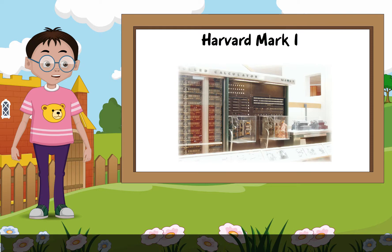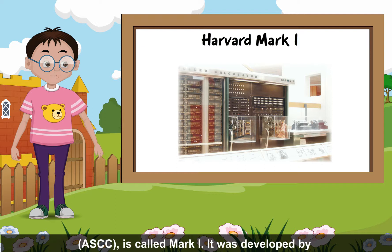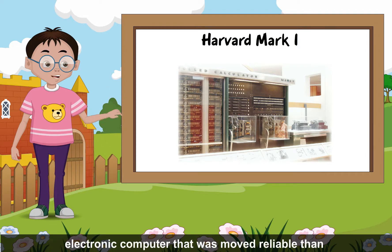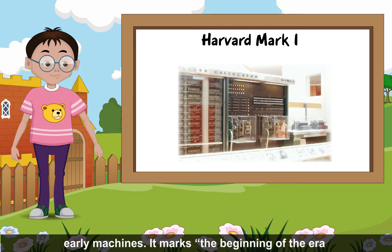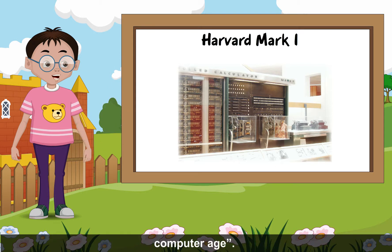Harvard Mark I: The IBM Automatic Sequence Controlled Calculator (ASCC) is called Mark I. It was developed by Howard Aiken at Harvard. It was the first fully automated electronic computer and was more reliable than early machines. It marks the beginning of the era of the modern computer and the real dawn of the computer age.